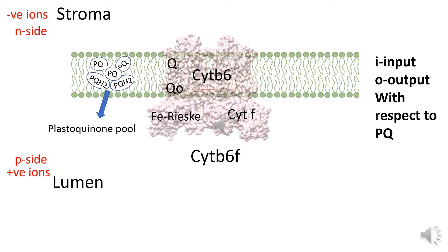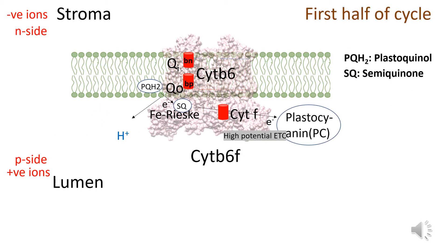Plastoquinone and plastoquinol are lipophilic molecules that stay within the thylakoid membrane in a pool known as the plastoquinone pool. Cytochrome b6 has two heme centers — Bn and Bp — with respect to the heme present toward the N-side or P-side of the thylakoid membrane, and cytochrome f has one heme center.